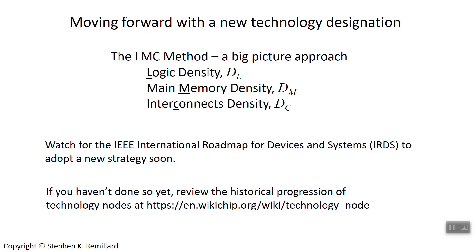So go to wikichips.org, study those nodes, and answer a few questions: What's the difference between a full node and a half node? Take a look at the progression of gate lengths. Who are the major players? Who typically comes out first with a new node? What are the gate pitches and what technologies are employed? Count how many nodes there have been since 1970. Take a really close look at that wikichips page — that's your homework.